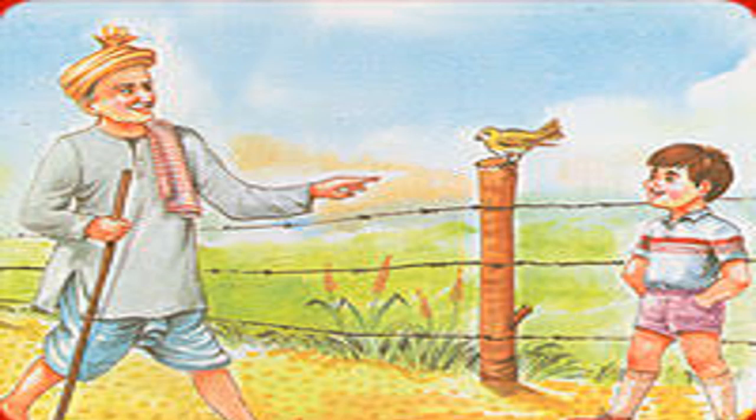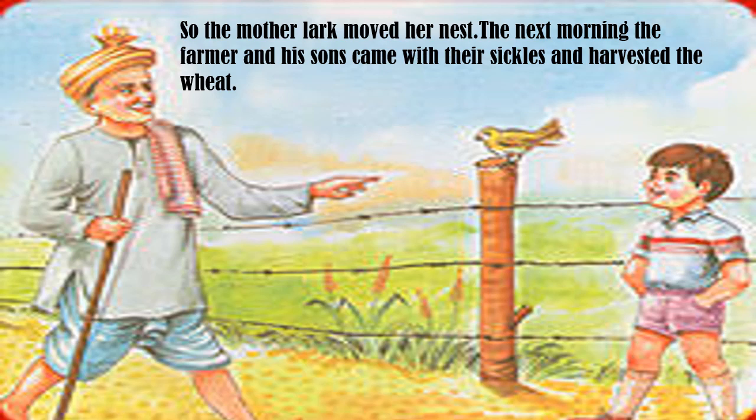The farmer said: the grain is ready to be cut, we cannot wait for our neighbors or relatives. Raghu, go with Ram to the barn right now and sharpen our sickles. At dawn we shall get to work and harvest the grain ourselves. Farmer ne apne beton se kaha — jao aur khalian se sickles sharp karke le aao, hum aapni fasal khud hi kaatenge.